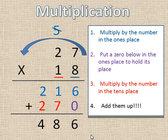So remember, when I have two double digit problems right here, with numbers that have digits in the ones and tens place, I multiply by the number in the ones place. Make sure I multiply both of these numbers. Put a zero in to hold its place. Multiply by the number in the tens place. Then I add them up.